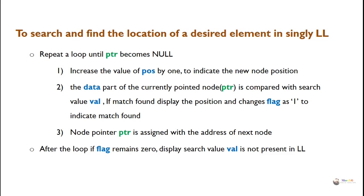After the loop, if flag remains 0, display that the search value val is not present in the linked list. After completing the loop we check the value of flag — if it remains as 0, the value is not present in the linked list.